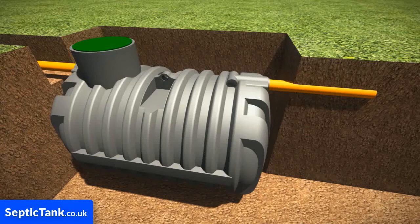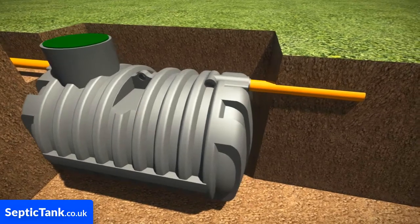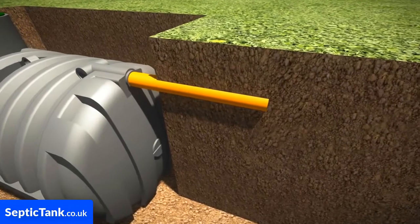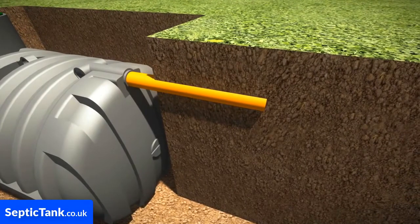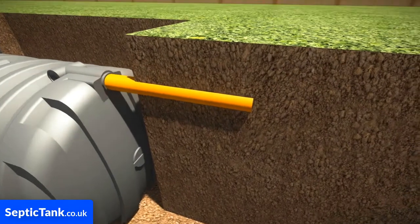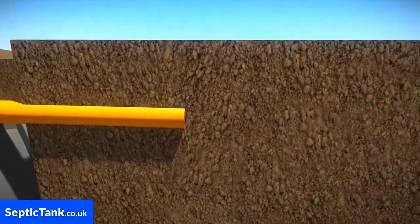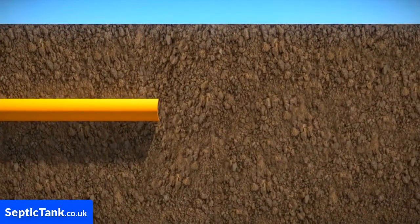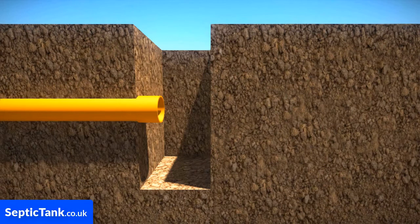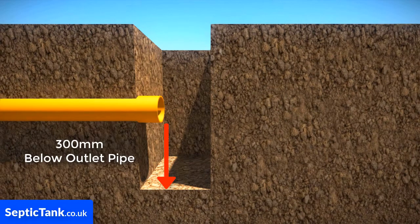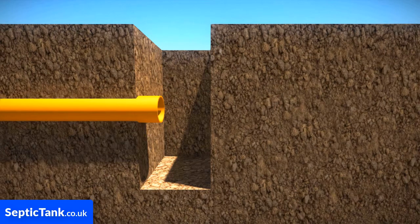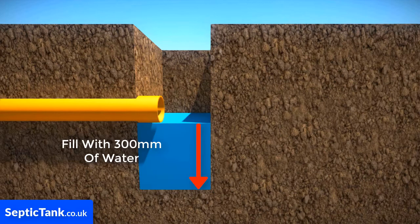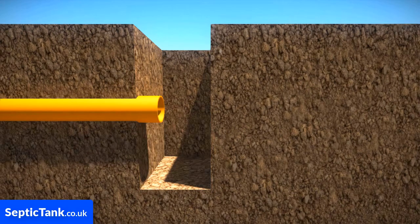So how do you carry out a percolation test? First, work out where you're going to install your septic tank, then work out where the outlet pipe will be. Once you've done that, dig a hole 300 millimeters square to a depth of 300 millimeters below the level of the outlet pipe. Then fill the 300 millimeter square section of the hole to a depth of at least 300 millimeters of water and allow it to seep away overnight.